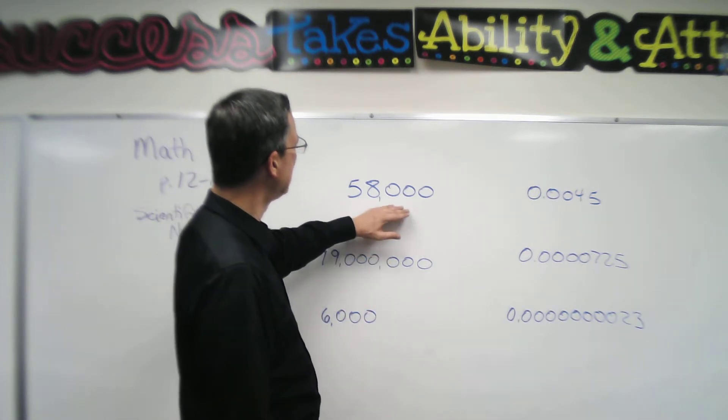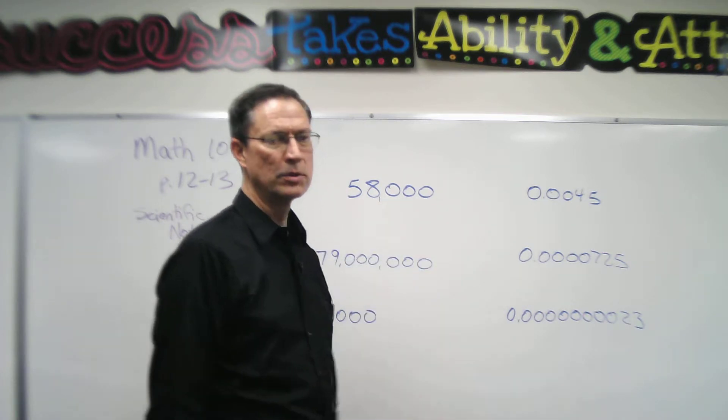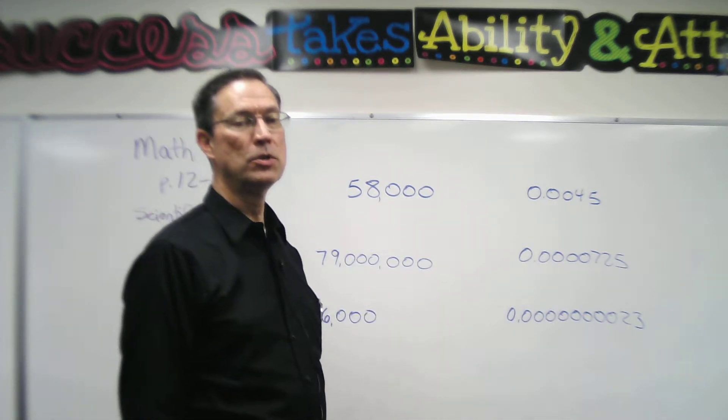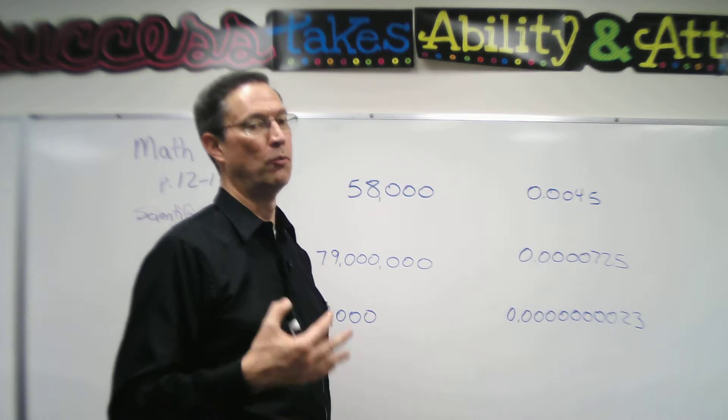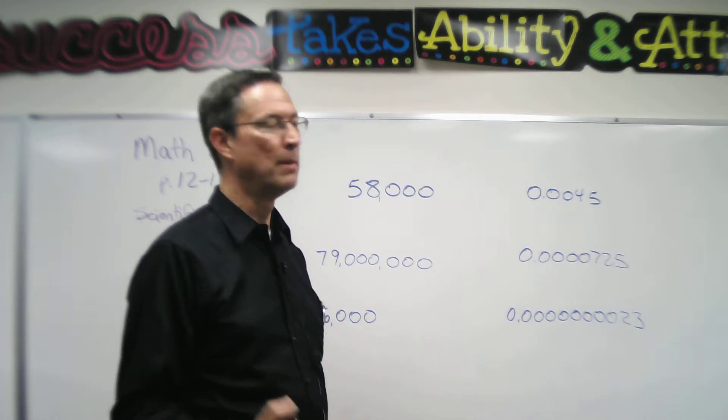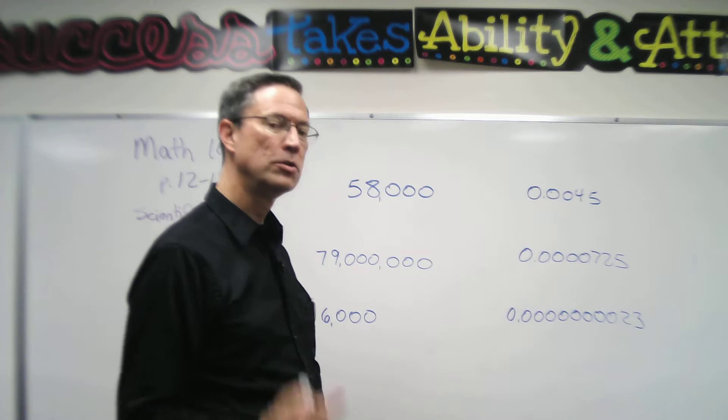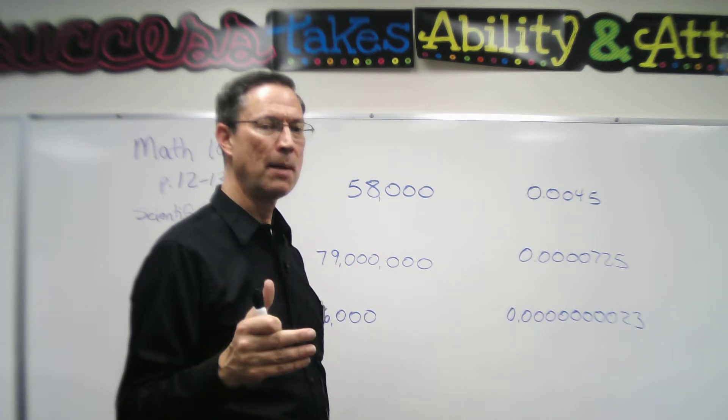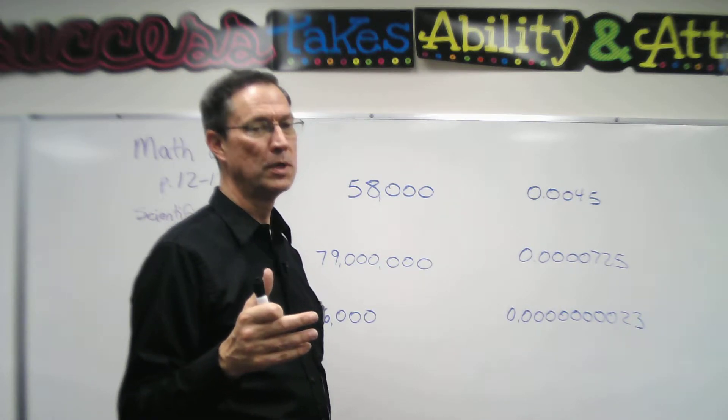Let's take a big number like 58,000. By the way, scientific notation is used primarily for really big numbers and really small numbers, and it's a shortened form. It's very common in upper sciences to use scientific notation.